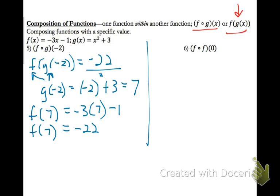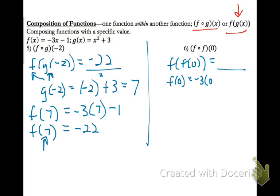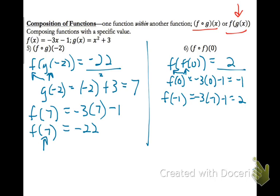We don't give a domain rule because we had a specific value in for x. Now let's do f of f of 0. Start with f of 0: negative 3 times 0 minus 1 equals negative 1. Then plug that back into f: negative 3 times negative 1 minus 1 equals 3 minus 1 equals 2. So f of f of 0 equals 2.